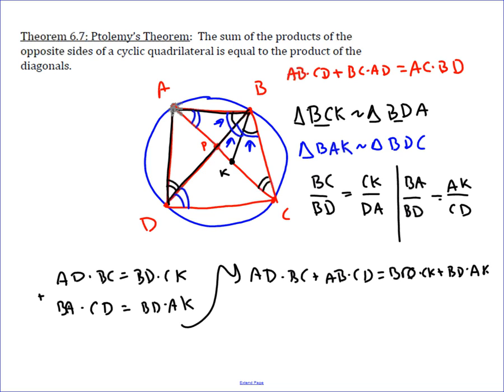This is what we wanted, right, from up here. AD times BC plus AD times CD. So we're not going to play with that anymore. In this one, we notice we got a BD in both of these. So we factor out our BD and we're left with CK plus AK by factorization.